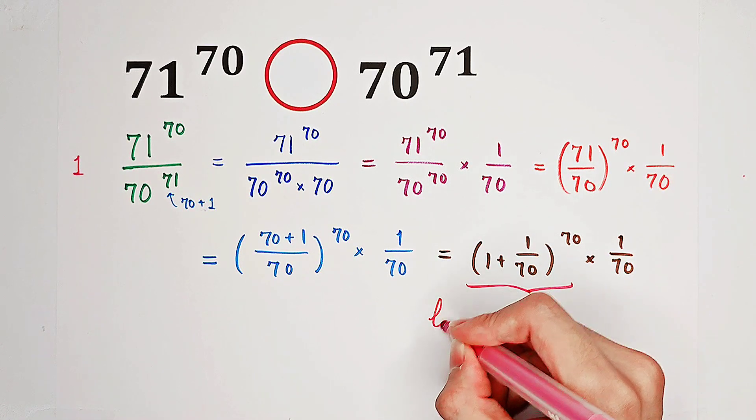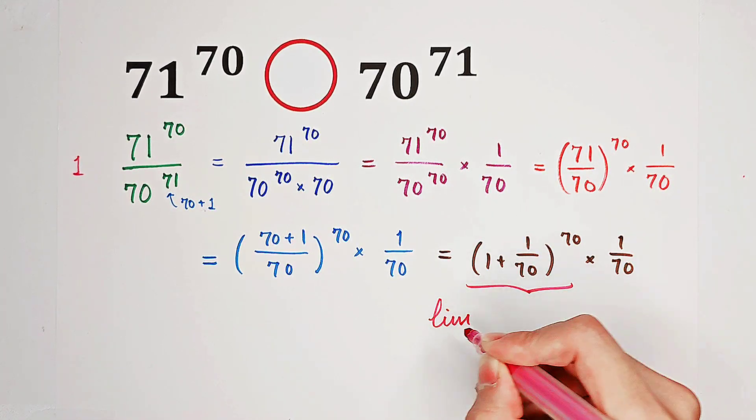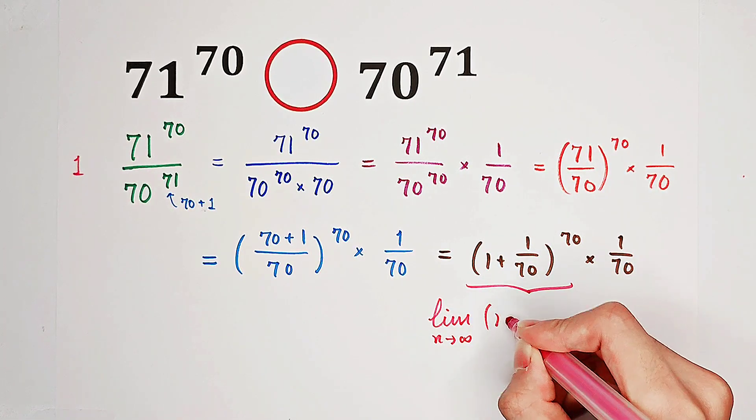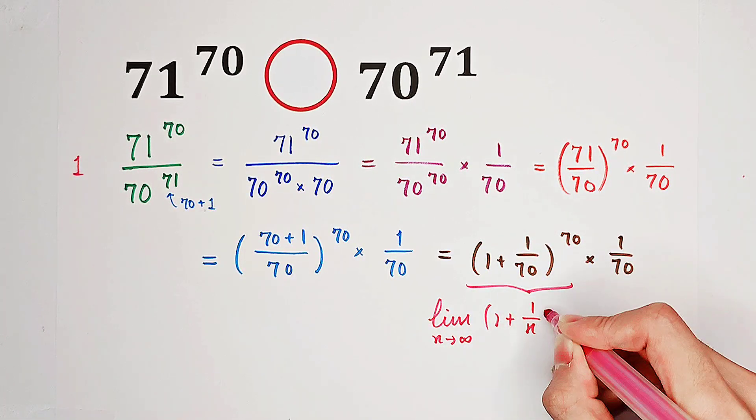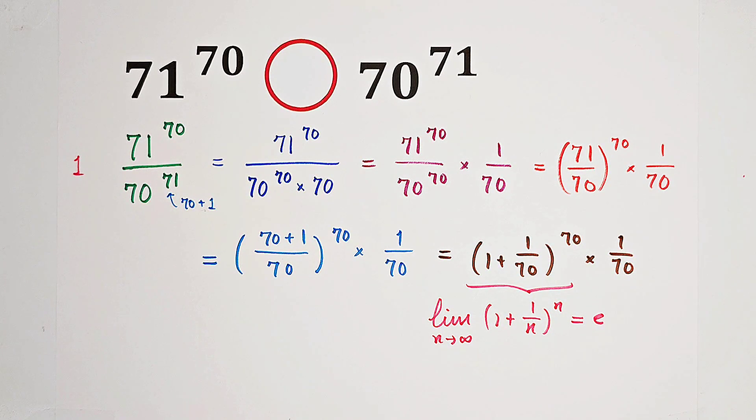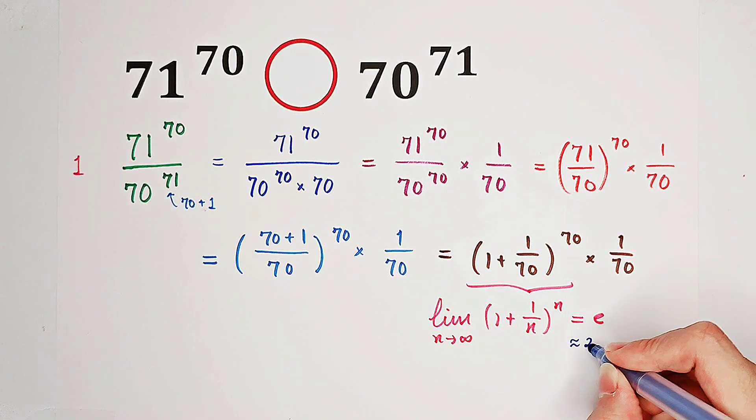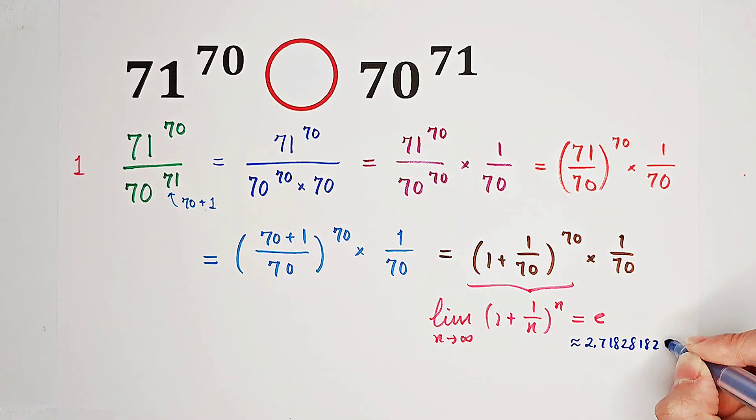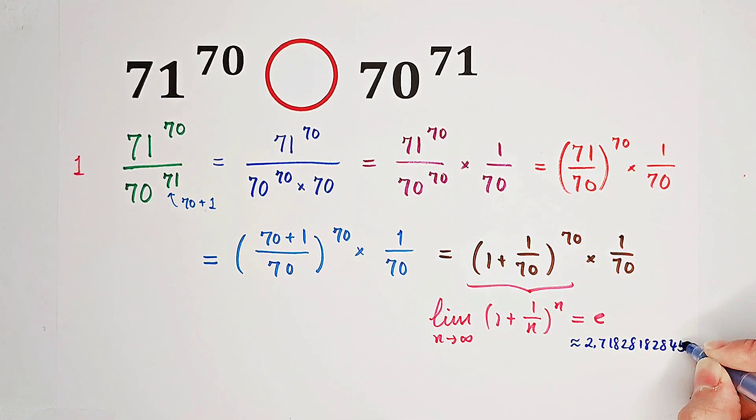To not forget, that the limit, if n tends to infinity, of 1 plus 1 over n, all to the power of n, equals e. Where e is the Euler's number, and it is approximately equal to 2.71828, 1828, 45, 90, 45.